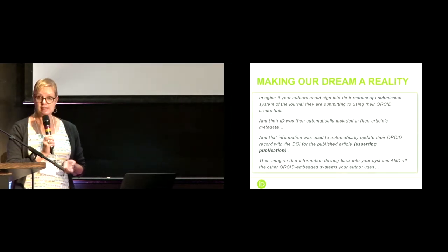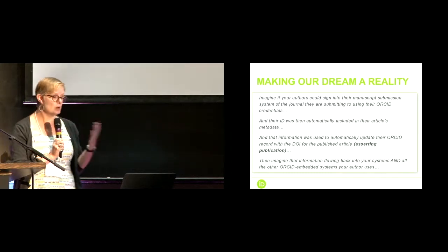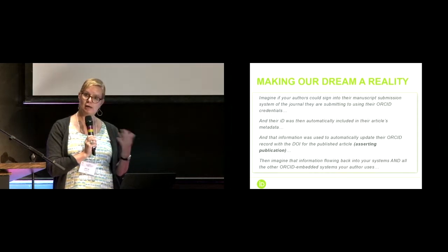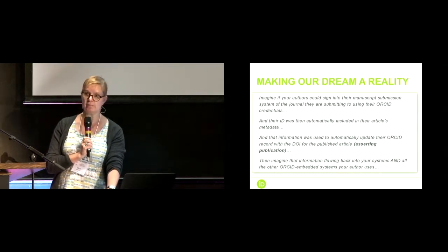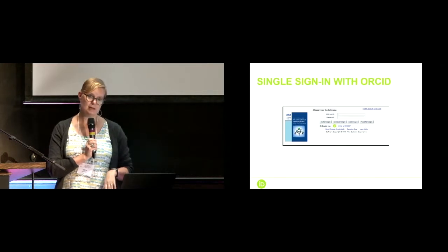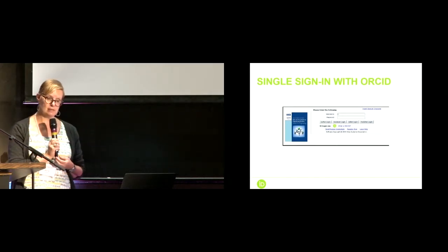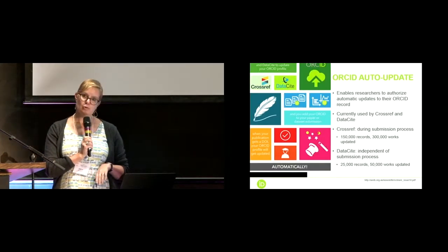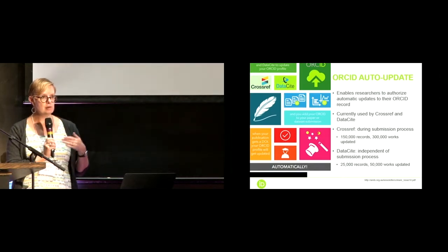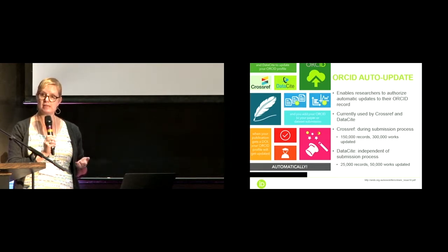How are we going to make this dream a reality? It's somewhat aspirational, but we are making good progress. This is the publishing version of making our dream a reality, where a researcher can use his or her ORCID ID at every stage of the publishing process, and have the information about their publication connected back to their record seamlessly. Editorial manager already has single sign-in with ORCID for well over 3,500 journals. ORCID auto-update enables researchers to use their ORCID ID when they submit a paper and then give CrossRef or DataCite permission to connect the DOI back to their ORCID record on publication.